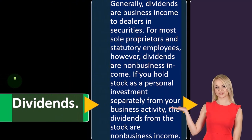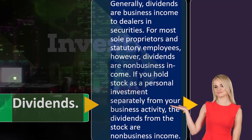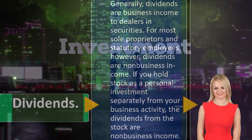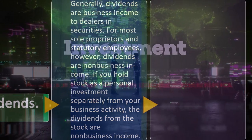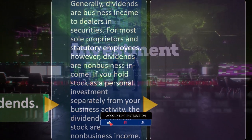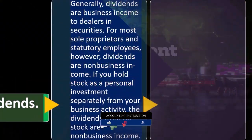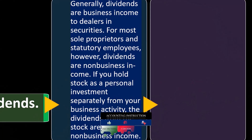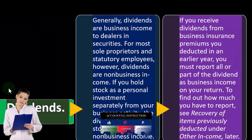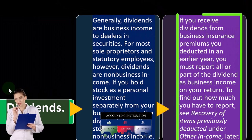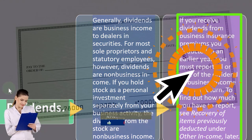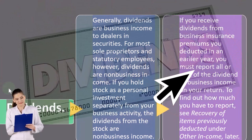Most people might have a business and also have some investments in stocks. When you receive investment or dividend income from stocks that aren't related to the business, it would be passive income — not part of business income. You would report it separately as dividend income, possibly using Schedule B, as discussed in prior presentations.